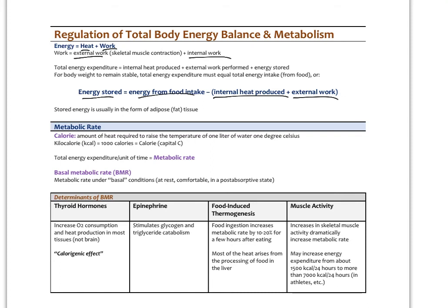Metabolic rate is total energy expenditure over time. A calorie is the amount of heat required to raise the temperature of one liter of water by one degree Celsius; a kilocalorie is 1,000 calories. In nutrition, we talk about kilocalories, sometimes written as Calorie with a capital C. Basal metabolic rate (BMR) is the metabolic rate under basal resting conditions in a post-absorptive state.